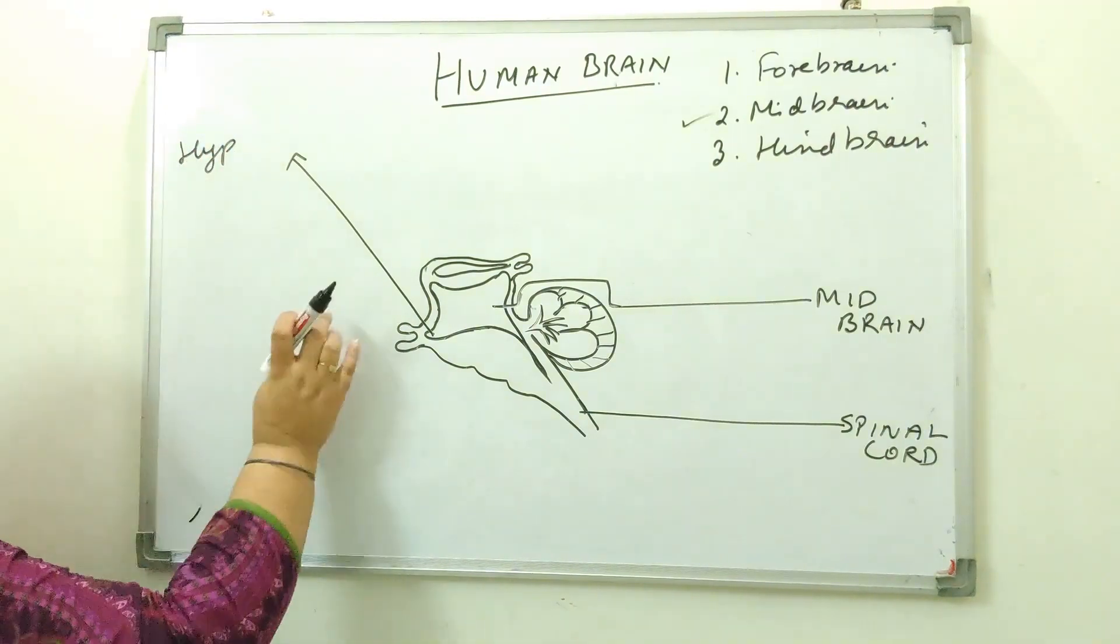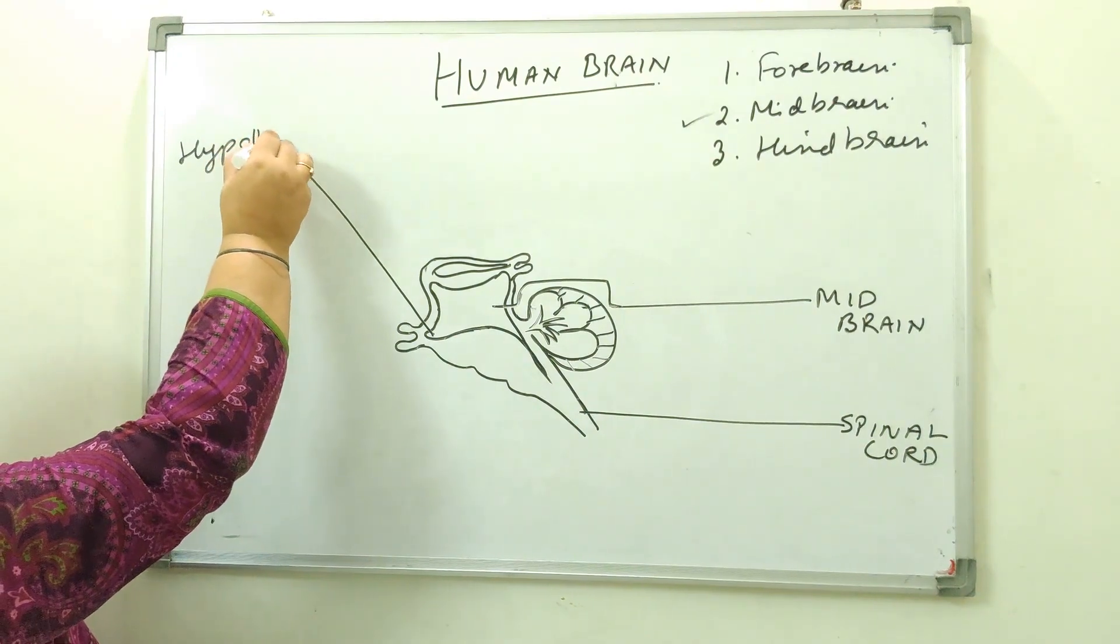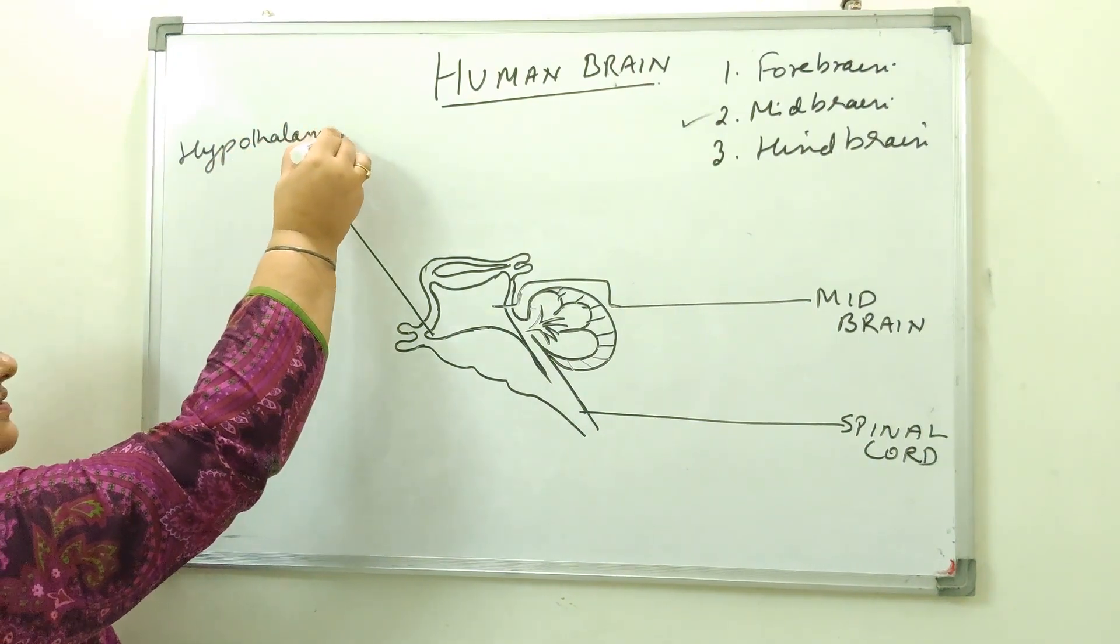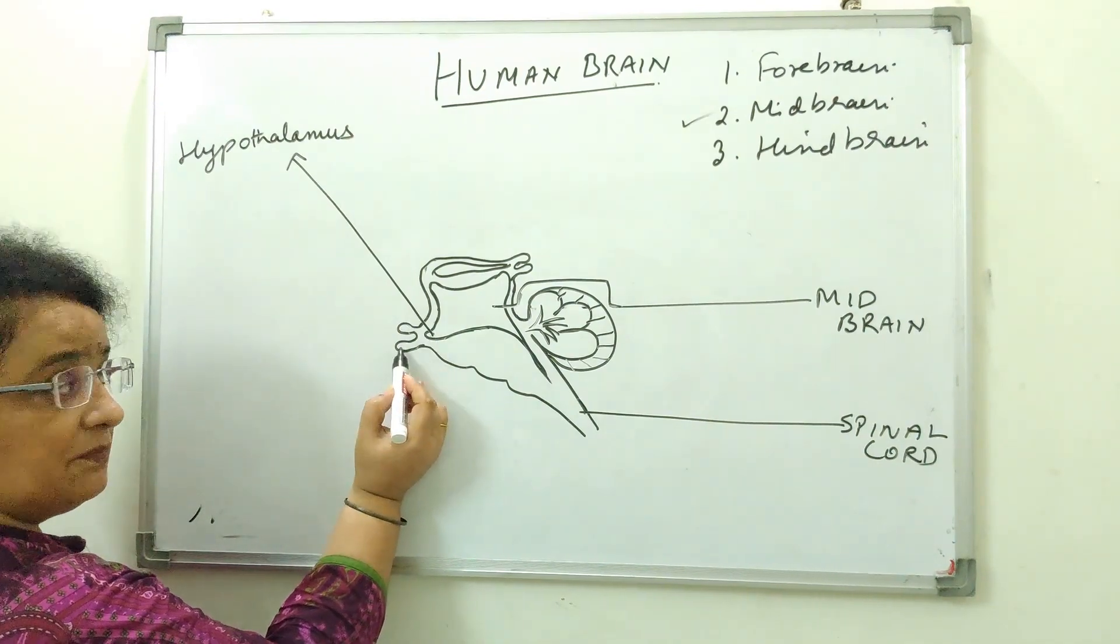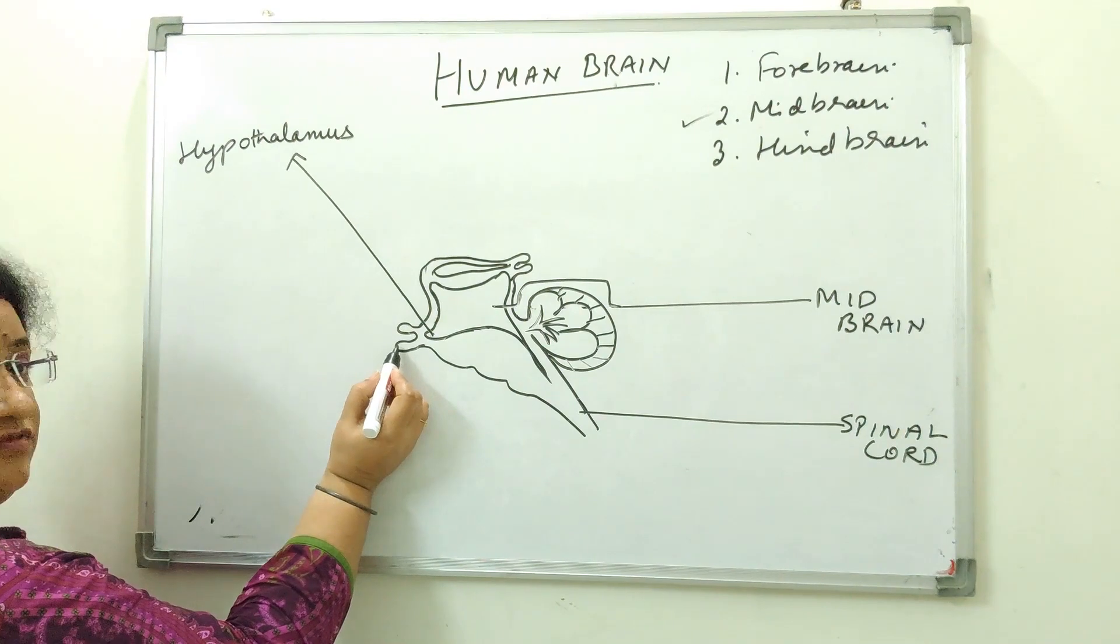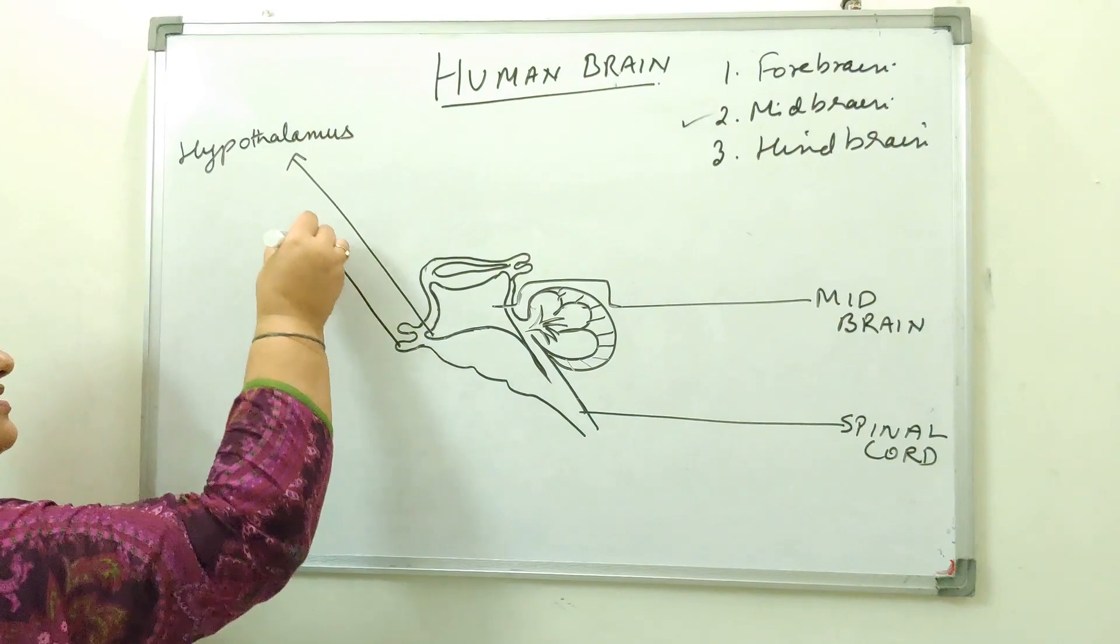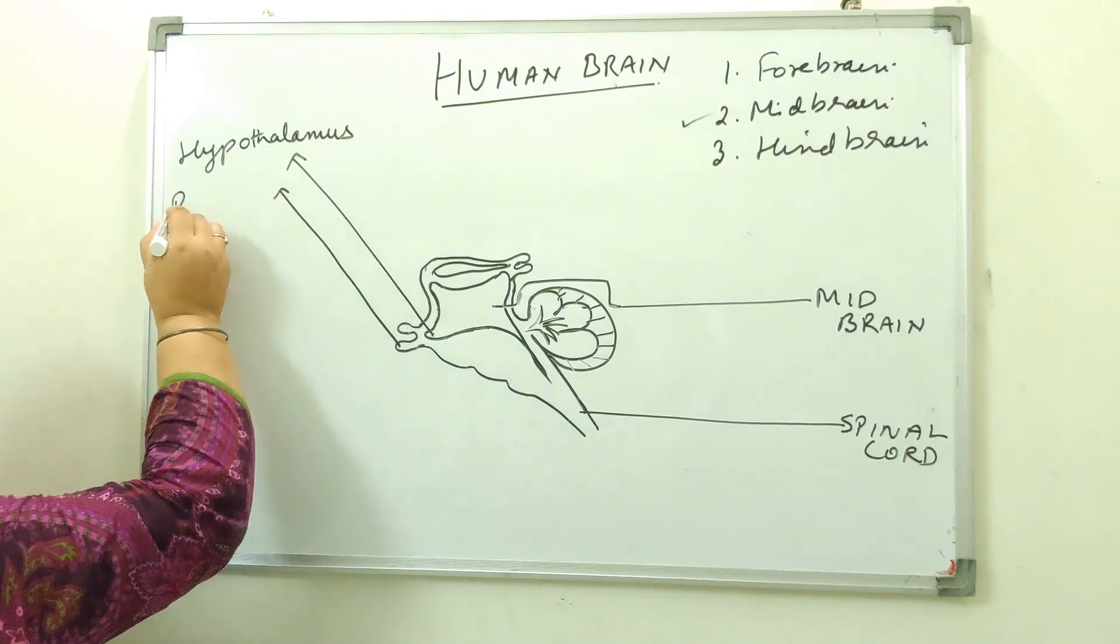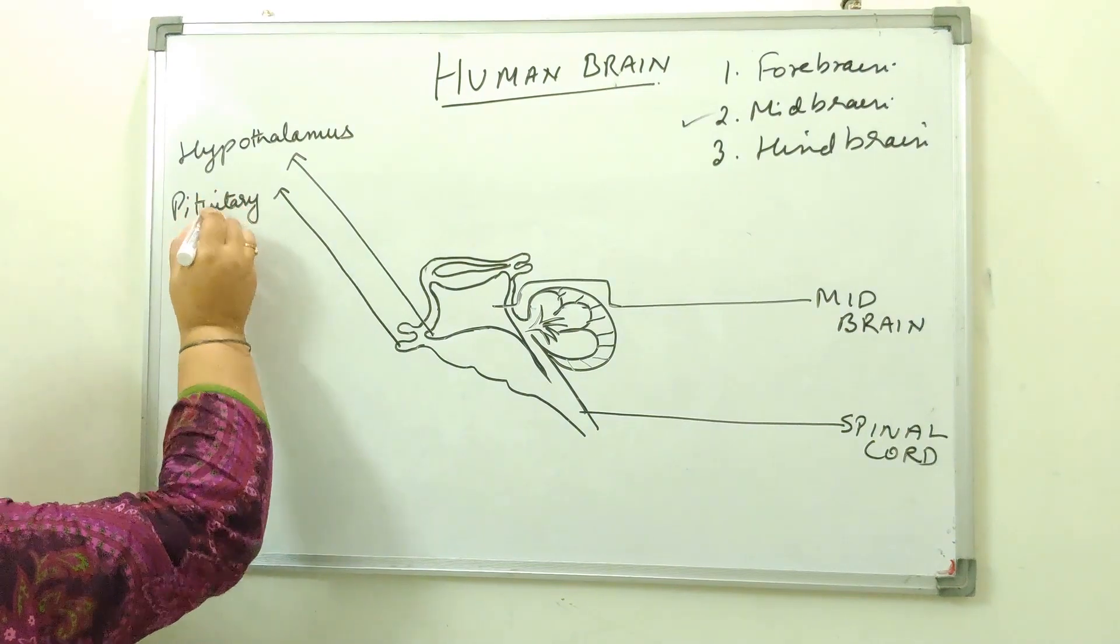I will write it over again because I need to complete the brain diagram on this side. This is the hypothalamus and just above the very front of hypothalamus, this lobe structure that we drew, this is nothing but this is the pituitary gland.